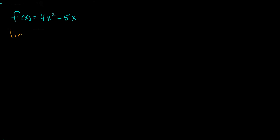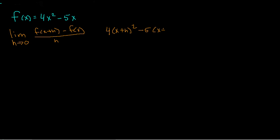To find the derivative, we need the limit as h approaches 0 of f of x plus h minus f of x, all divided by h. First thing I've got to do is plug in x plus h to my function. So I get 4 times x plus h squared minus 5 times x plus h, minus my function.